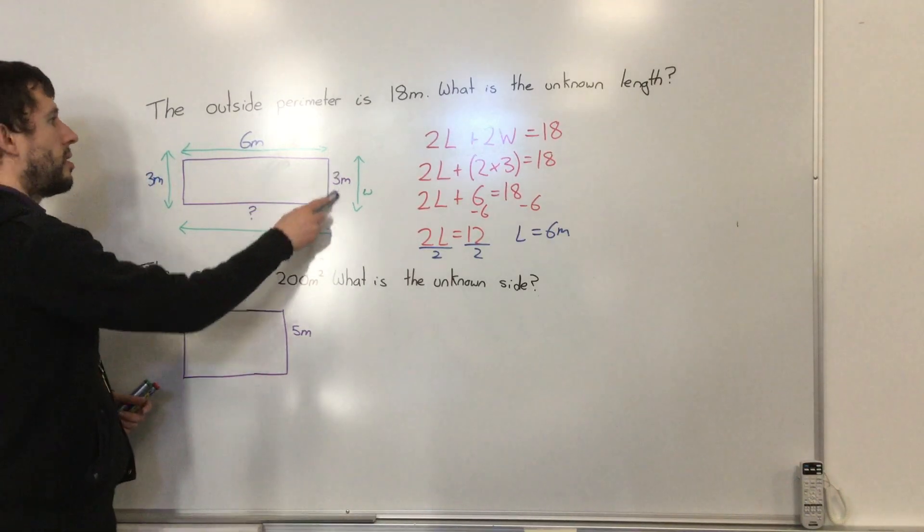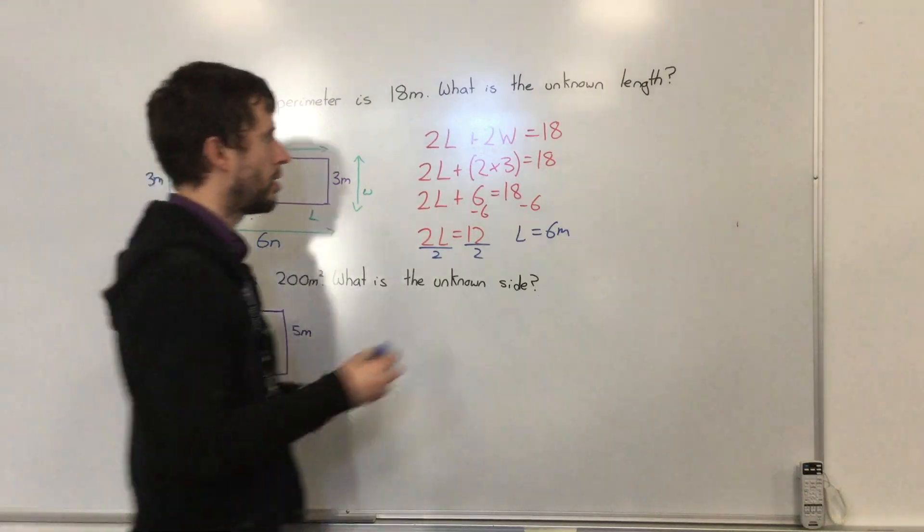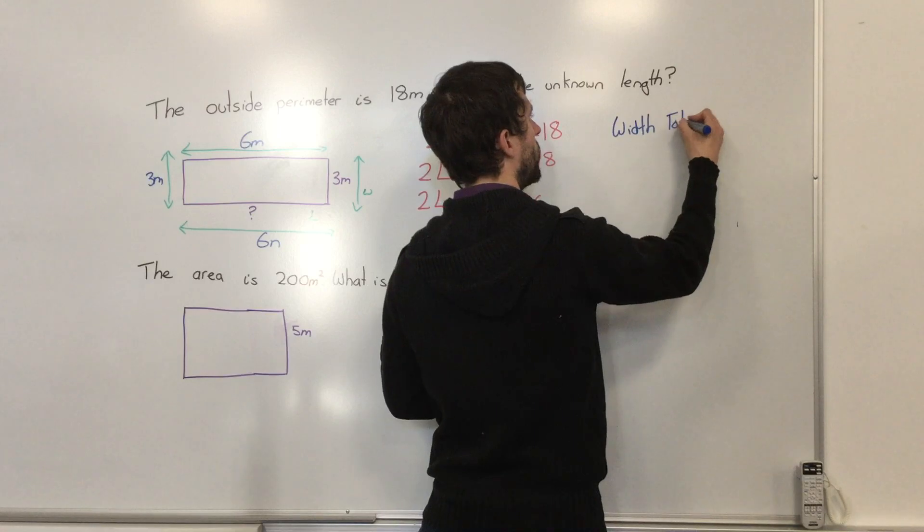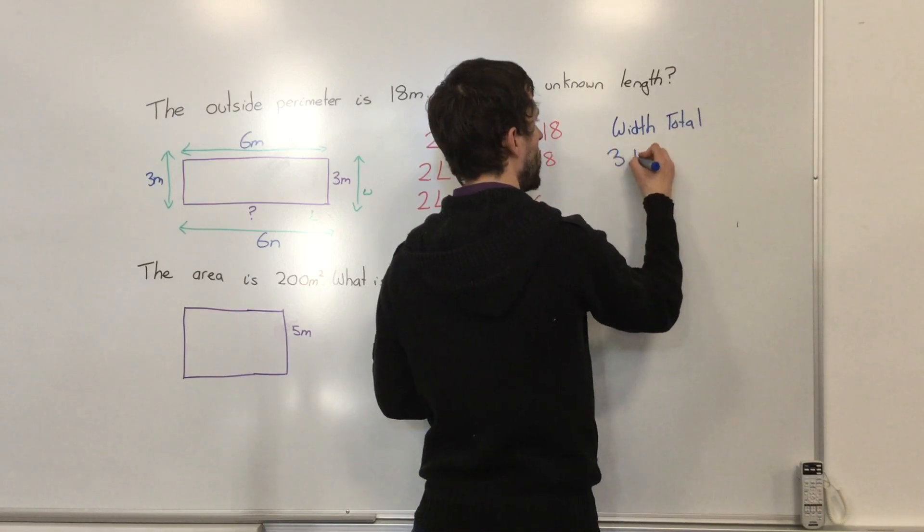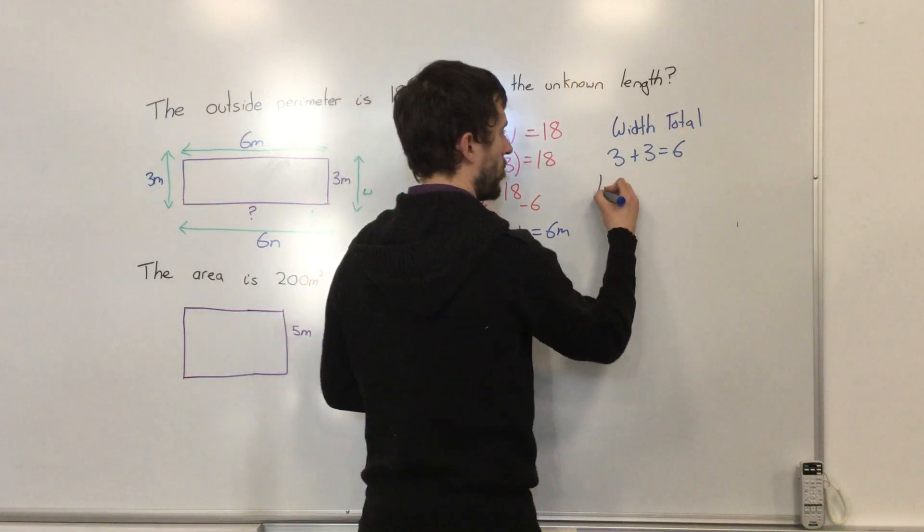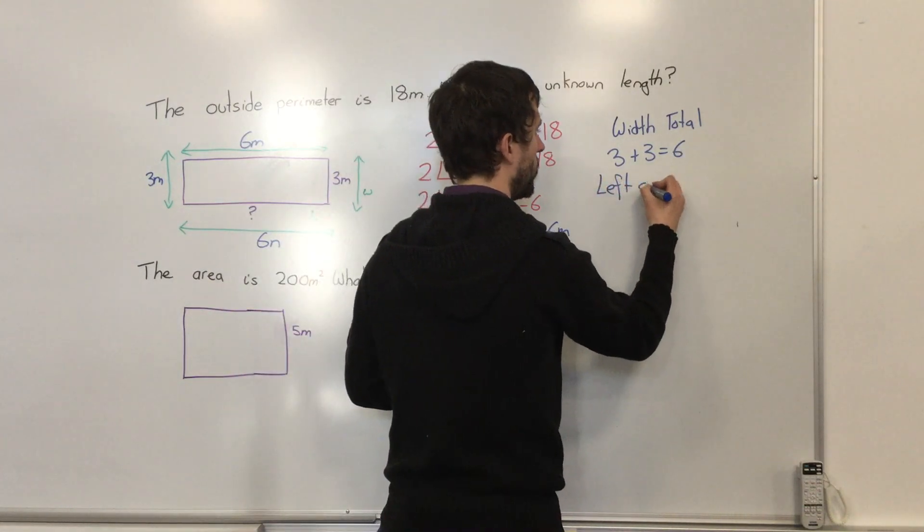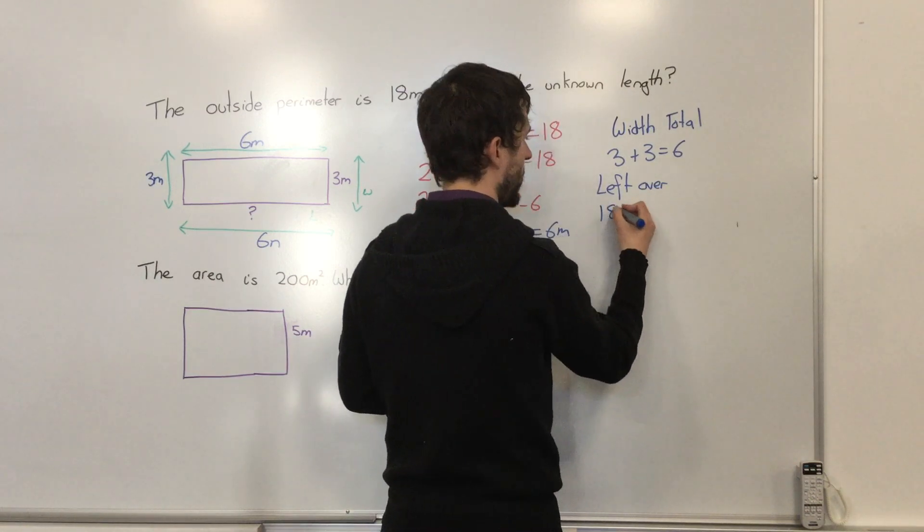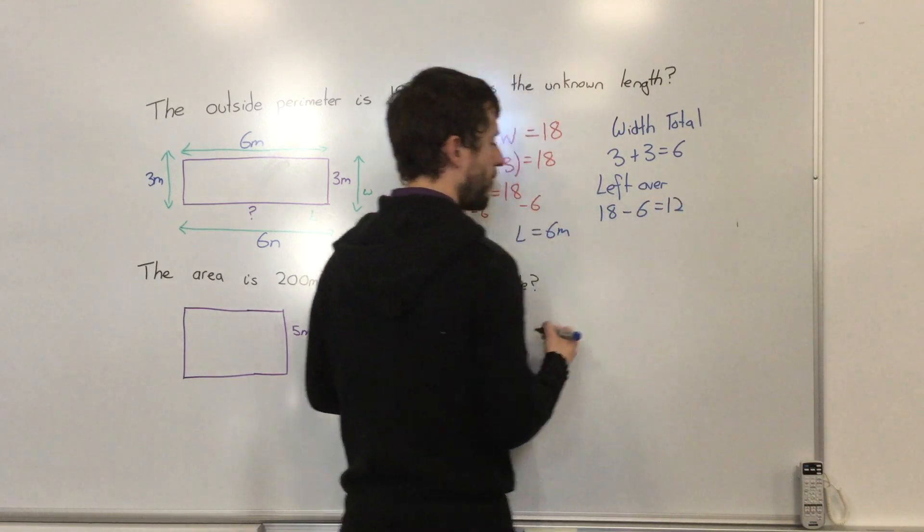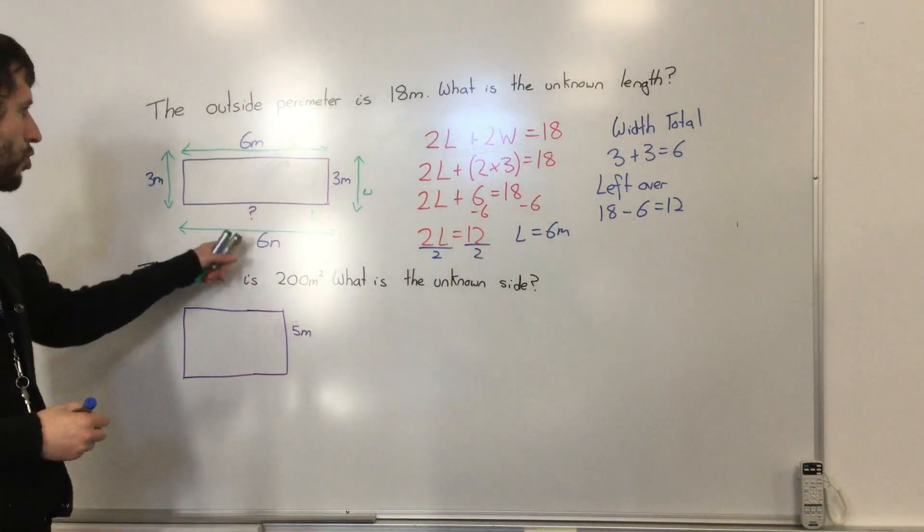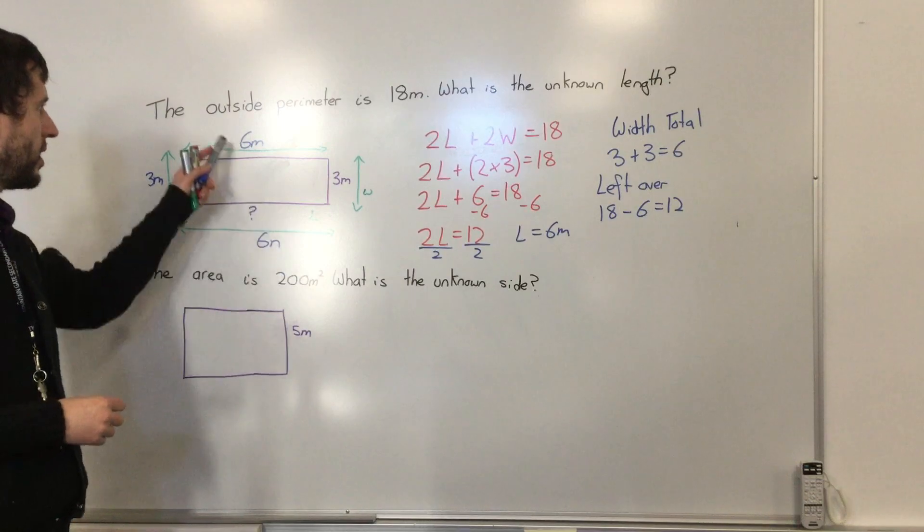Another way I could have done it: this is 3 and this is 3. So width total is 3 plus 3 equals 6. Then left over is 18 take 6 equals 12, and then half 12 to get 6.